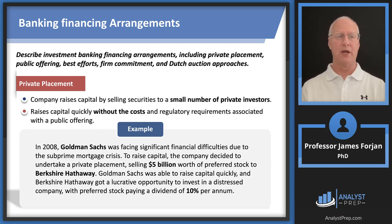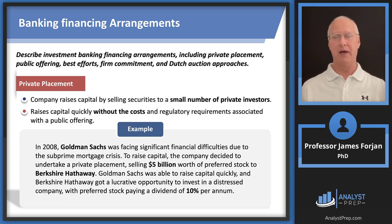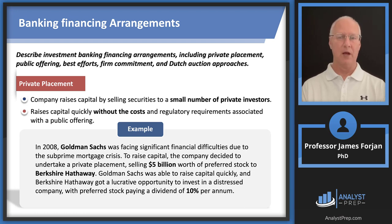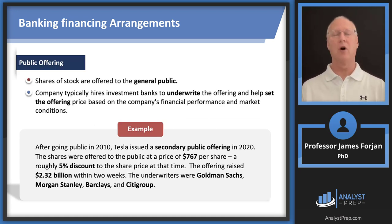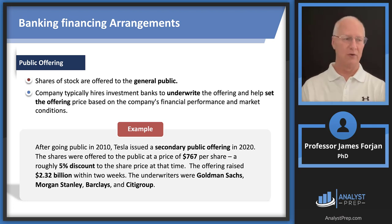Moving on to the next learning objective: private placement, public offering, best efforts, and Dutch auction. Private placement is when a company — public or private — sells securities, most likely fixed income, to a small number of private investors. This lowers the issuing costs. There's an example about Goldman Sachs and Berkshire Hathaway. A public offering — the initial public offering — is when the investment banking firm says you want to raise $100 million, here's $100 million, have a great day; you give us the right to sell your securities. This is the underwriting function of the investment banking industry.